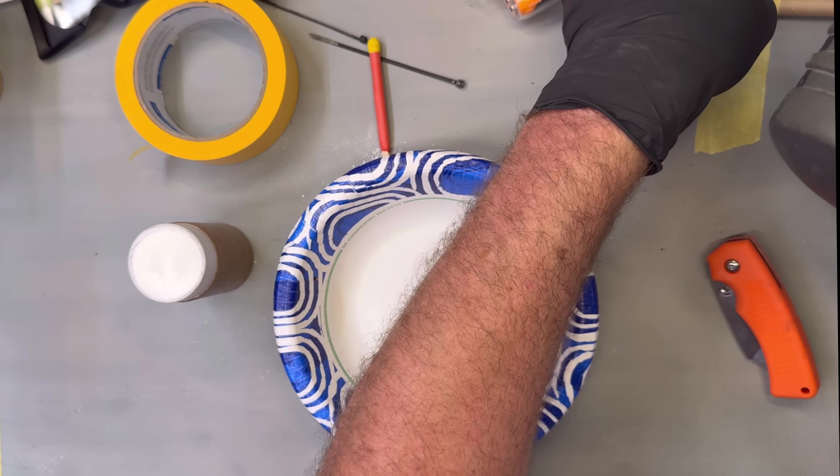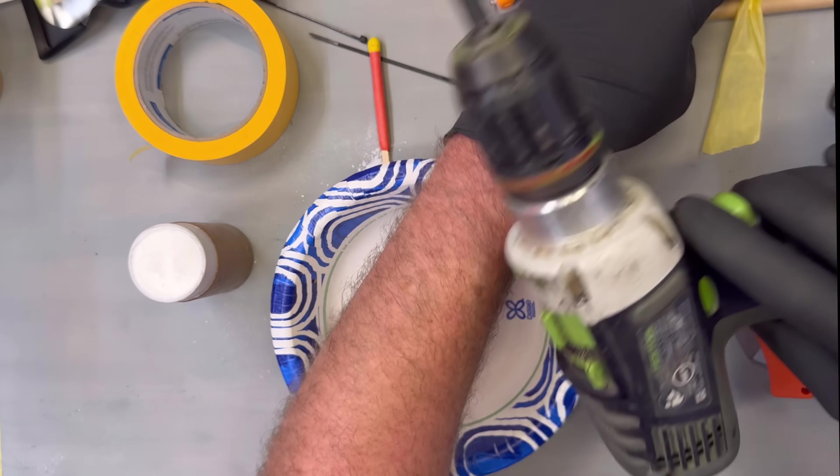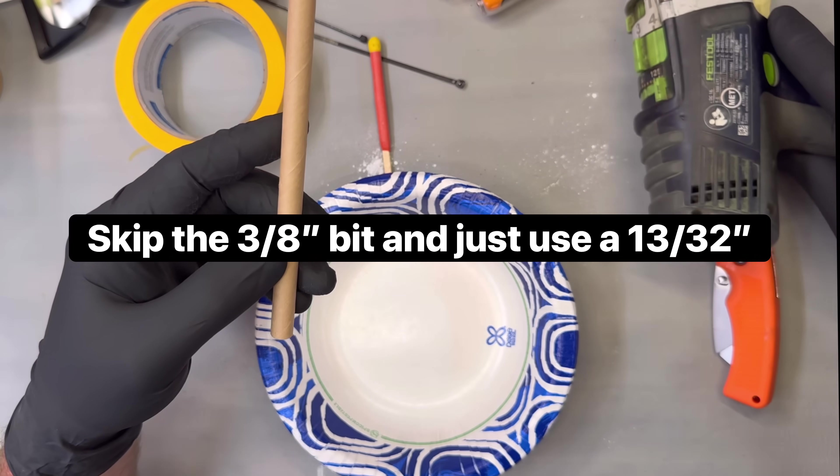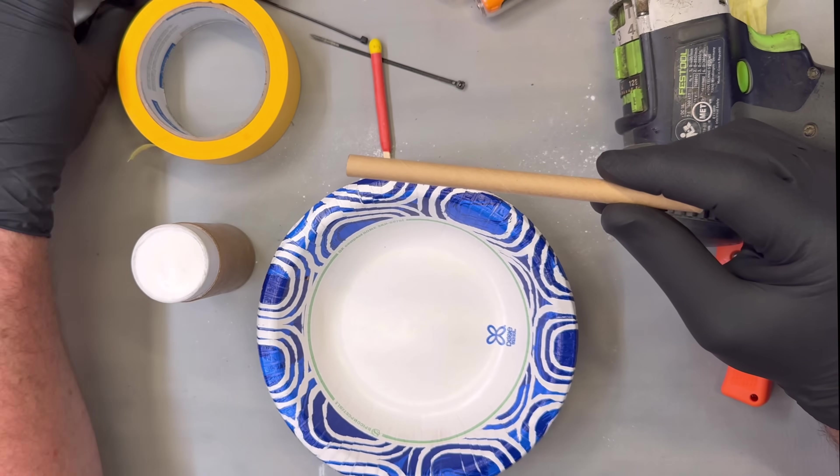This is a three-eighths inch drill bit, and this is the mason bee tube. Well, there's 12 of them included in my pull cord kit or wire pull kit.